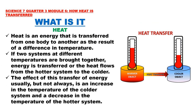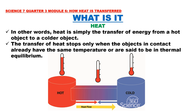Let us start our discussion about heat. Heat is an energy that is transferred from one body to another as the result of a difference in temperature. If two systems at different temperatures are brought together, energy is transferred — the heat flows from the hotter system to the colder. Heat transfers from the warmer object going to the cooler object. The effect of this transfer of energy is usually an increase in the temperature of the colder system and a decrease in the temperature of the hotter system. The transfer of heat stops only when the objects in contact already have the same temperature, or are said to be in thermal equilibrium.